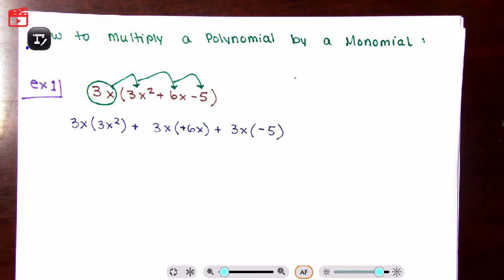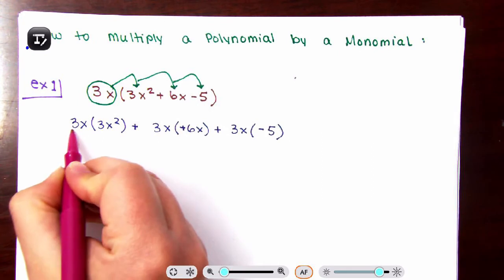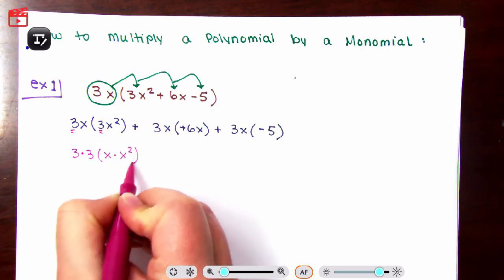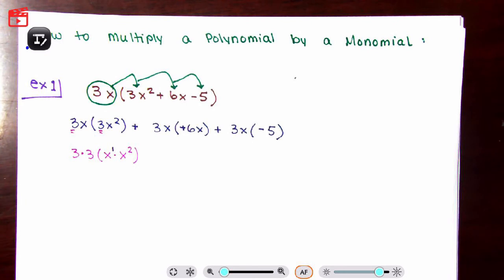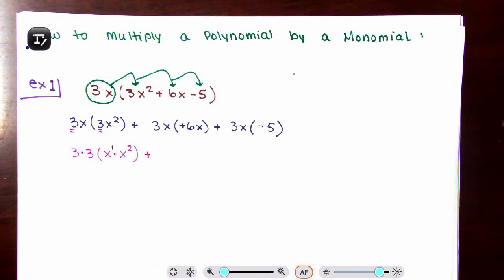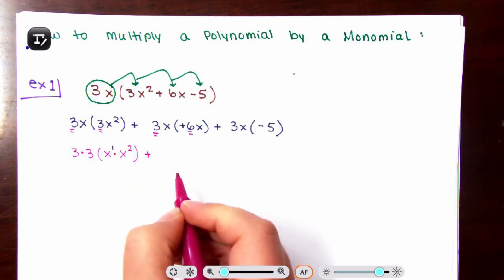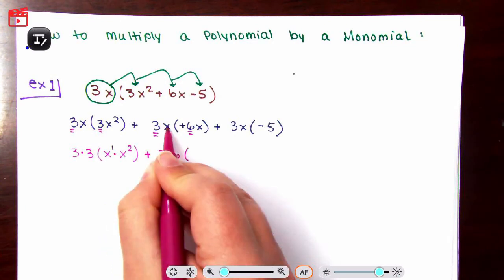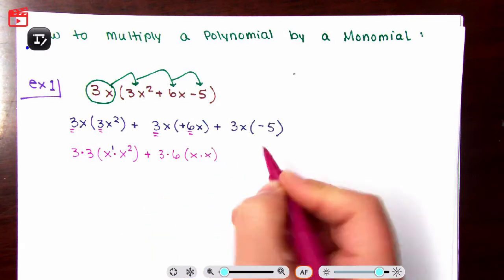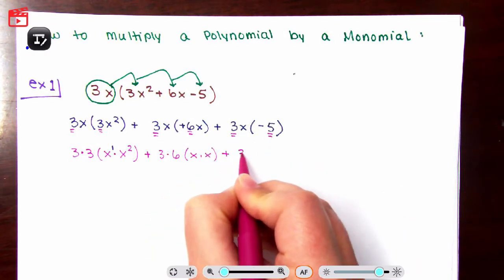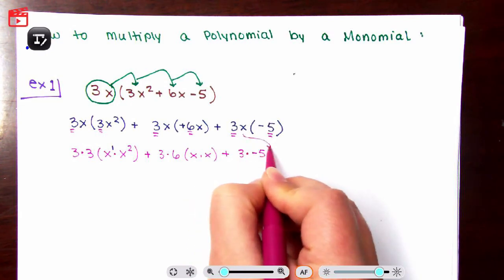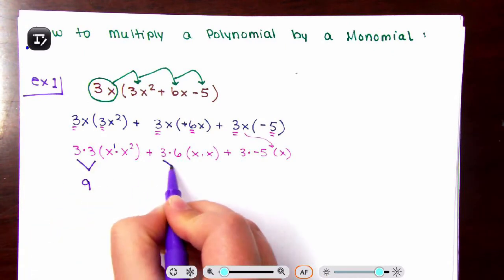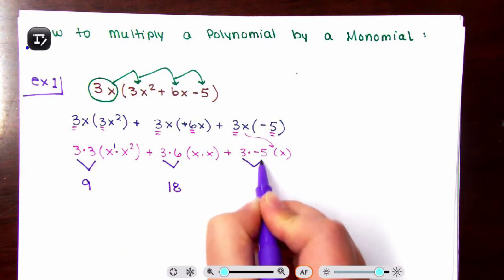Now that we are here, we combine just like we did with monomials. We have 3 and 3, so 3 times 3; and x and x squared, so x times x squared. There is no exponent on the first x, so we put a 1 there. Then 3 times positive 6, and x times x. And 3 times negative 5, with a lonely x. Multiplying the numerics: 3 times 3 is 9, 3 times 6 is 18, and 3 times negative 5 is negative 15.